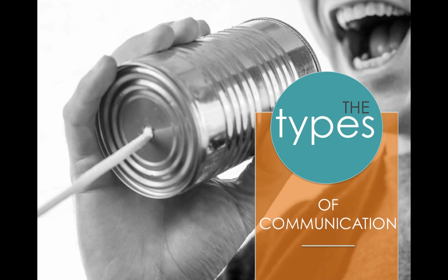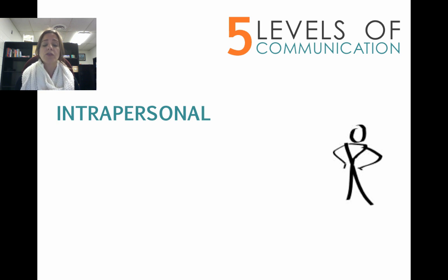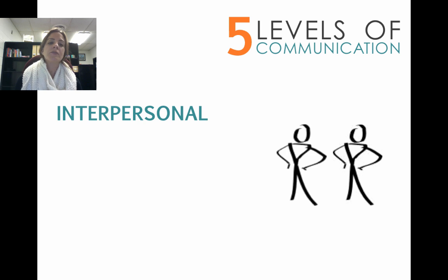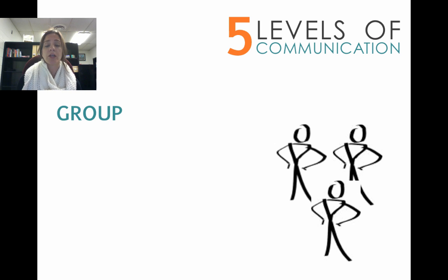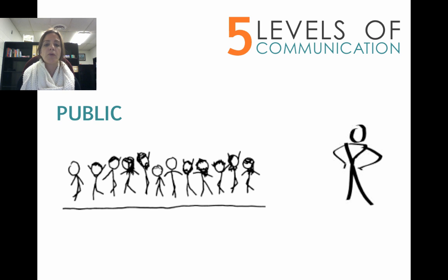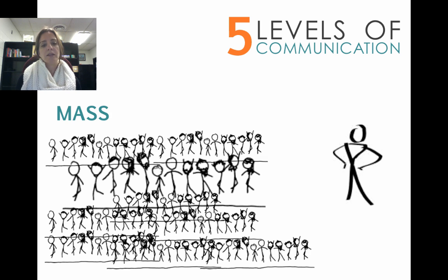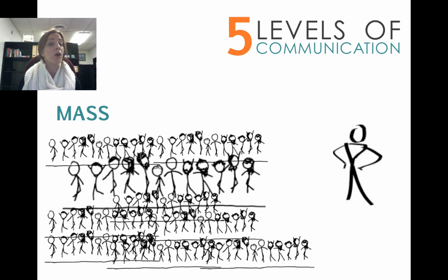Now we want to look at the different types of communication so we can figure out strategies to combat this. There are five basic levels of communication. The first is intrapersonal communication — with just one person, yourself. Next is interpersonal communication, with two people. The third level is group communication, with three or more people working toward a common goal. The fourth level is public communication, where a speaker communicates to an audience. And lastly there is mass communication, where a speaker communicates to a huge wide audience through some type of medium like TV, radio, newspaper, or social media and the internet.